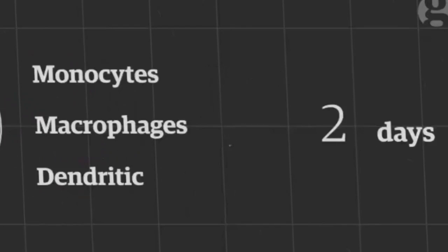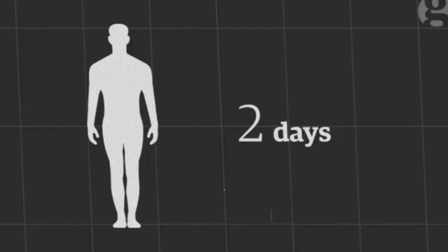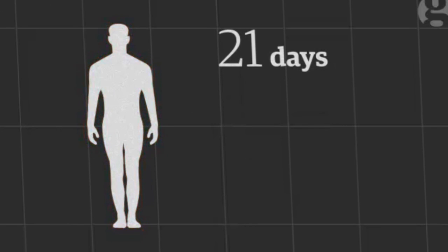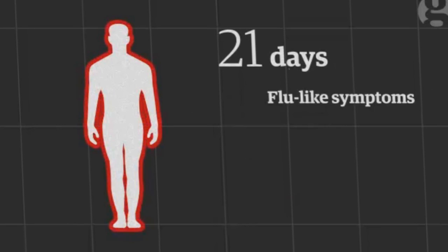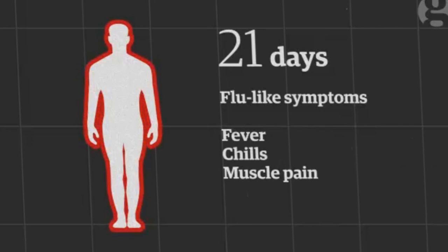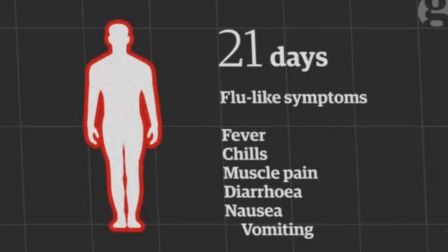The incubation period of the virus is two to twenty-one days. Then people start to show extreme flu-like symptoms: a sudden onset of fever, chills, and muscle pain, alongside diarrhoea, nausea, and vomiting.